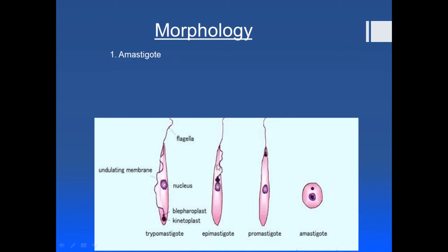As the parasite swims, folds of this membrane are formed, which is why it is called the undulating membrane. In the epimastigote form, the undulating membrane is shorter compared to the trypomastigote. In the trypomastigote form, there is again a cylindrical body and a central nucleus, but the kinetoplast is placed posteriorly — this is its key distinguishing feature.